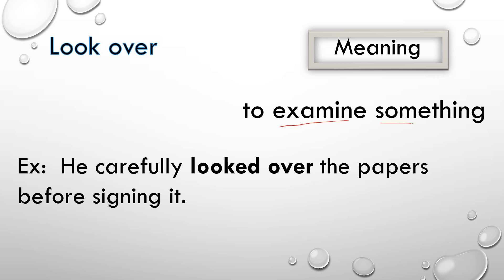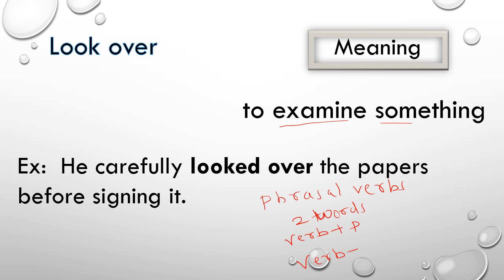So to summarize, phrasal verbs are a set of two words — a verb with a preposition or a verb with an adverb. When these two words are read separately they have different meanings, but when joined together they give a new meaning. For example, 'look after' means to take care. Hope you got the concept — thank you so much for your patience.